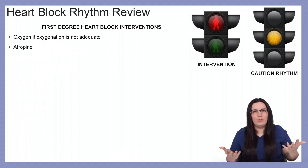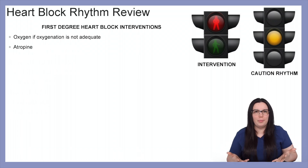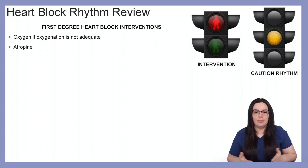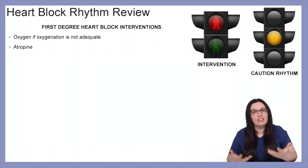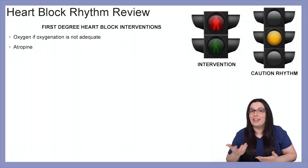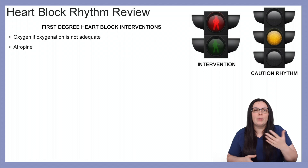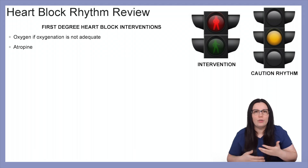There's not a whole lot that you're going to do for a first degree heart block unless it is causing problems. If oxygenation is inadequate, we can provide oxygen to our patients, as well as atropine if the heart rate continuously keeps slowing down.